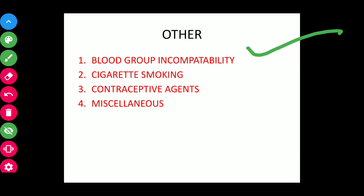Environmental factors include cigarette smoking, alcohol consumption, contraceptive agents, drugs, chemicals, and noxious agents. Cigarette smoking increases the risk due to formation of carboxyhemoglobin and decreased oxygen transfer to the fetus, causing oxygen insufficiency. Alcohol consumption should be avoided or minimized during pregnancy. Contraceptive agents like IUD in situ increase the risk, whereas oral pills do not.